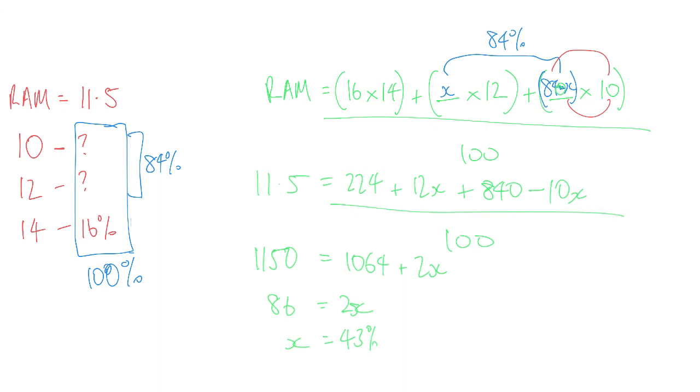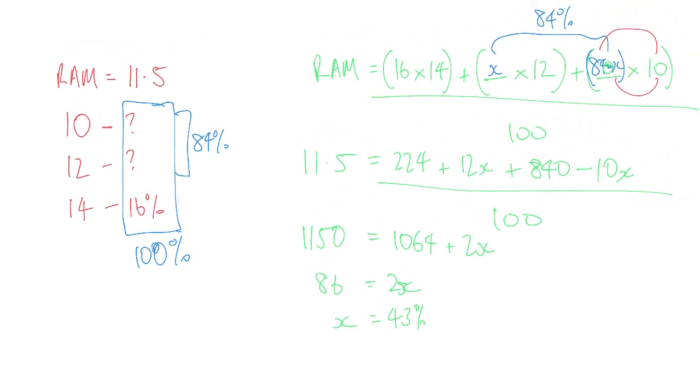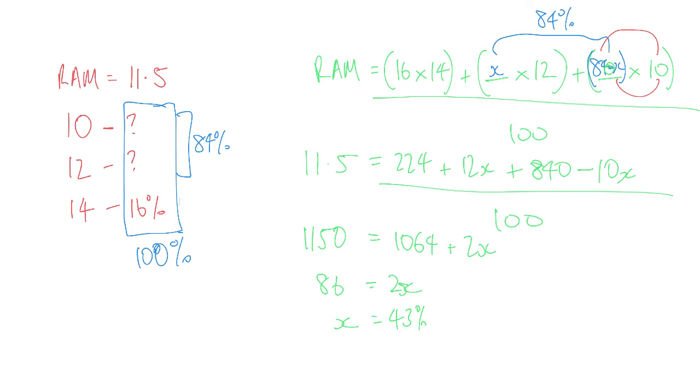So therefore then we go back and we say, okay, well, if x is 43% and x was related to the 12, then the 12 has to be 43%. And if the 84 has to be comprised of the 43% and something else, so that's 84 take away 43, and that's then 41%. So that's how you would work out the percentage abundance of a couple of isotopes from the RAM.